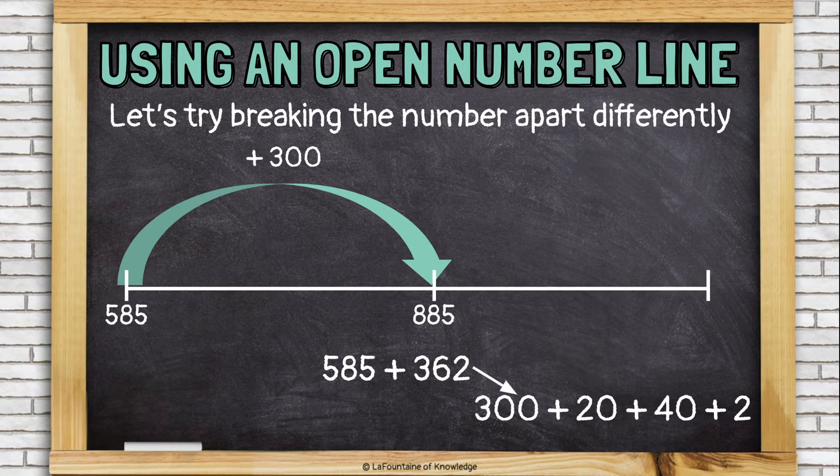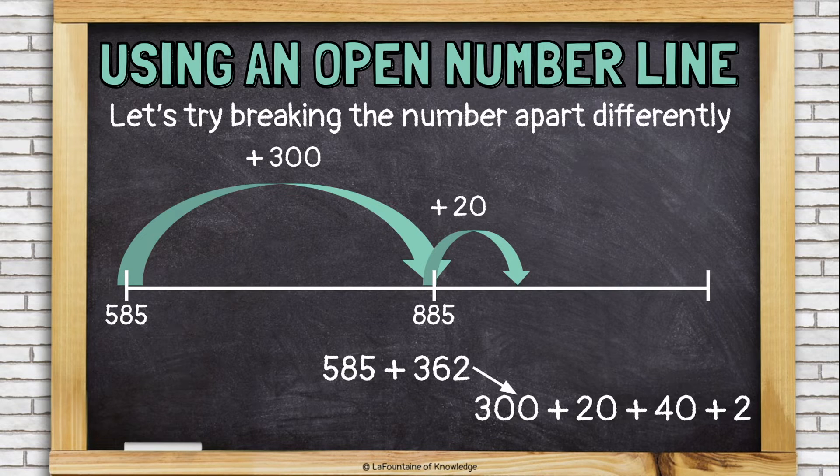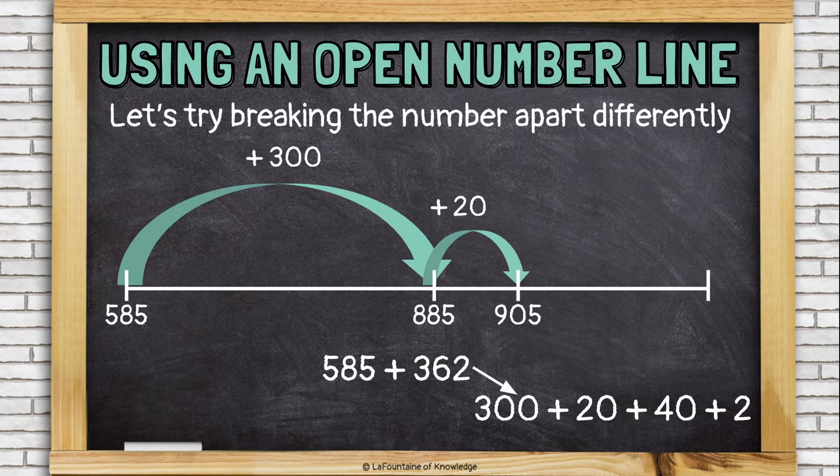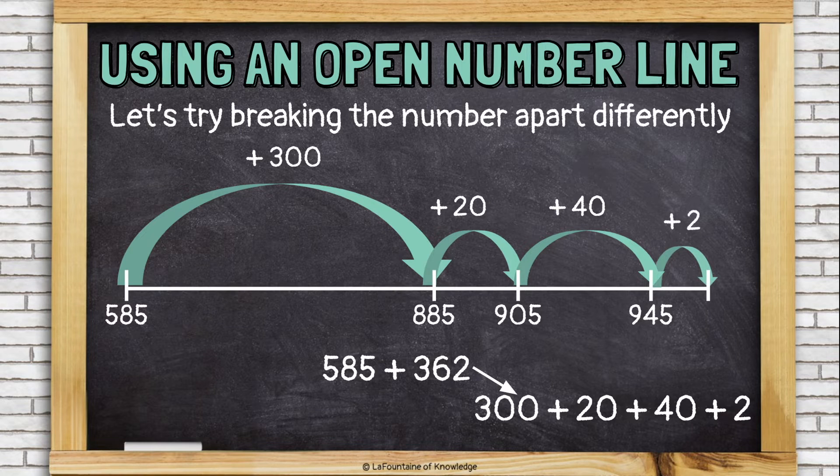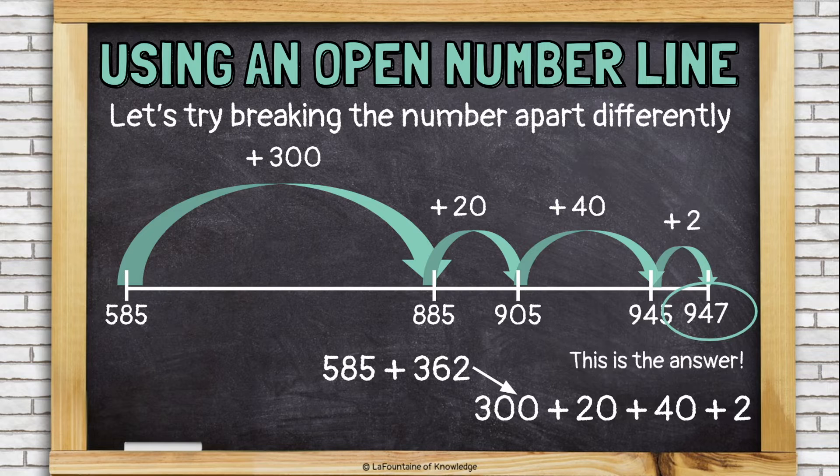We have 2. Let's try adding 20 next. 885 plus 20 is 905. And then I'll add 40, and that gets me to 945. And then 2 more, I will land at 947, which is the answer to this addition problem.